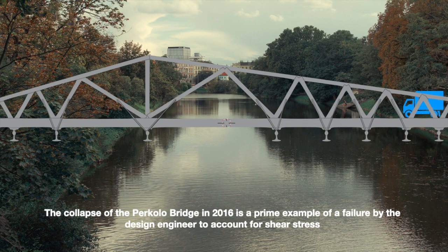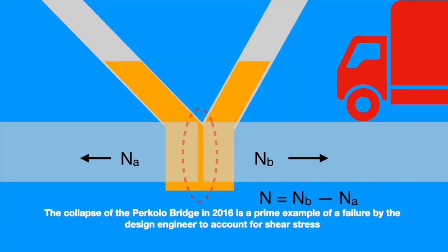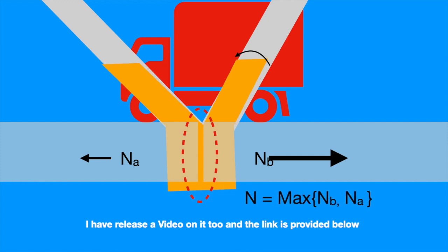The collapse of the Perkolo bridge in 2016 is a prime example of a failure by the design engineers to account for the shear stress. I have released a video on it too and the link is provided below.